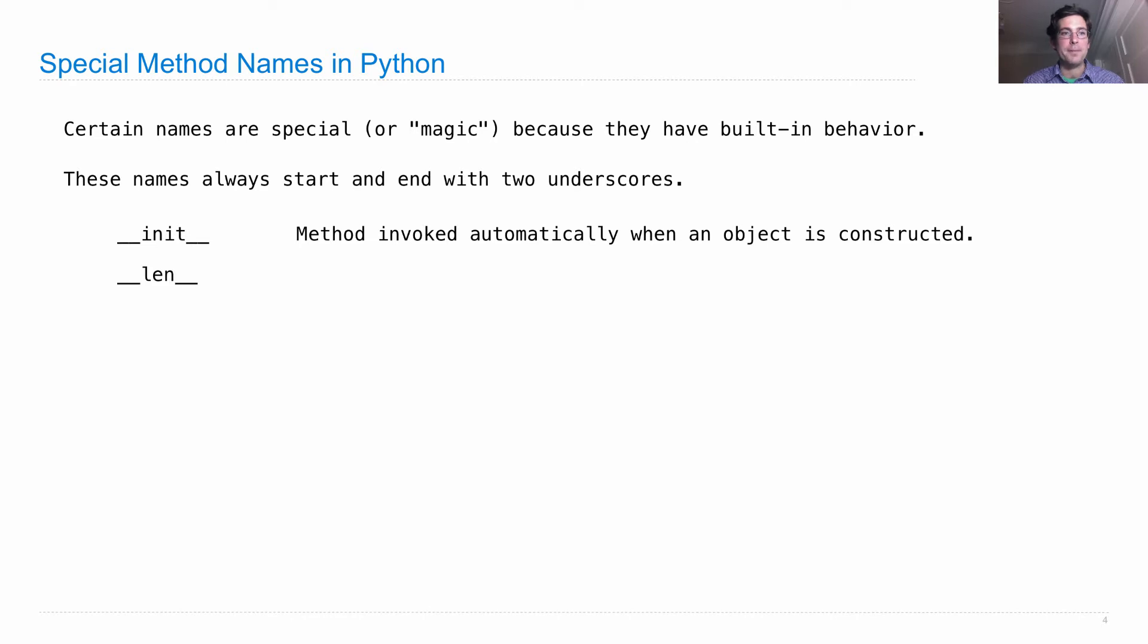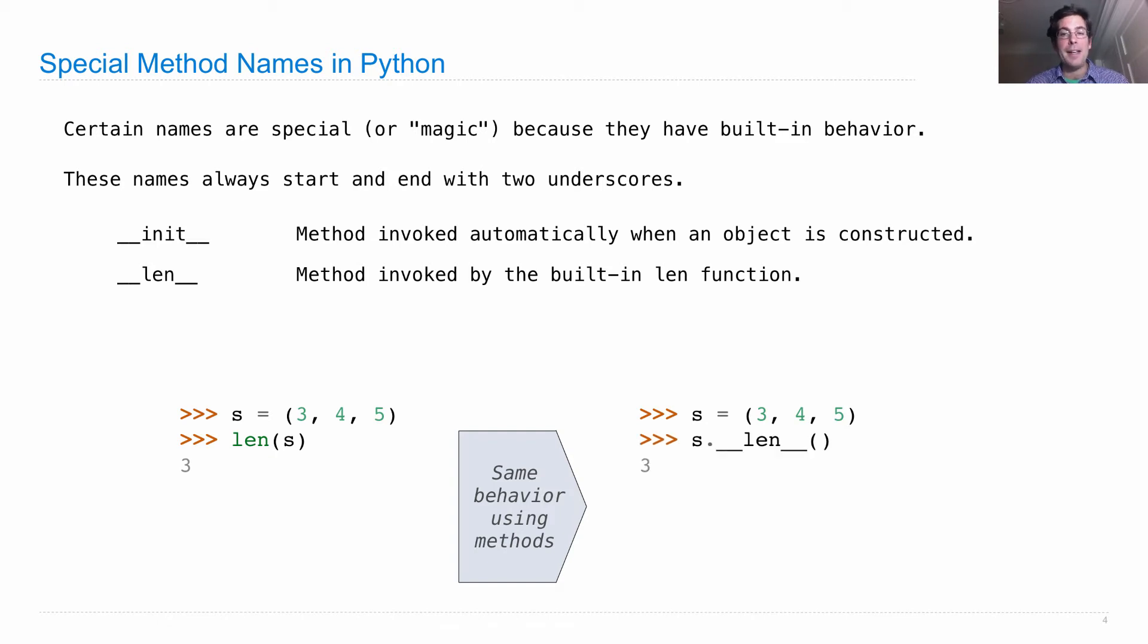We'll look at a few more this lecture. For instance, there's one called __len__, and it's invoked by the built-in len function. Let's say I create a tuple, 3, 4, 5. Normally I would find its length by calling the len function. But it turns out I can equivalently get the same behavior just by using a method on s. s.__len__() will also give me 3. That's because all the len function does is invoke the method with this special name on whatever object is passed into it.